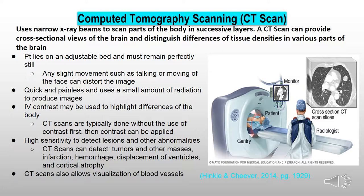IV contrast may be used to highlight differences of the body. CT scans use high sensitivity to detect lesions and other abnormalities. CT scans can detect things such as tumors and other masses, infarctions, hemorrhaging, displacement of the ventricles, and cortical atrophy. CT scans can also visualize blood vessels.